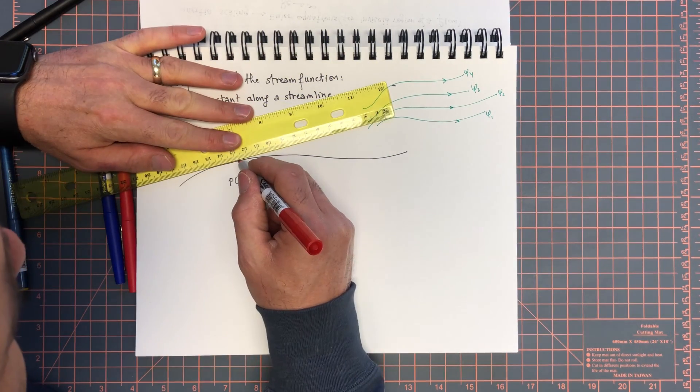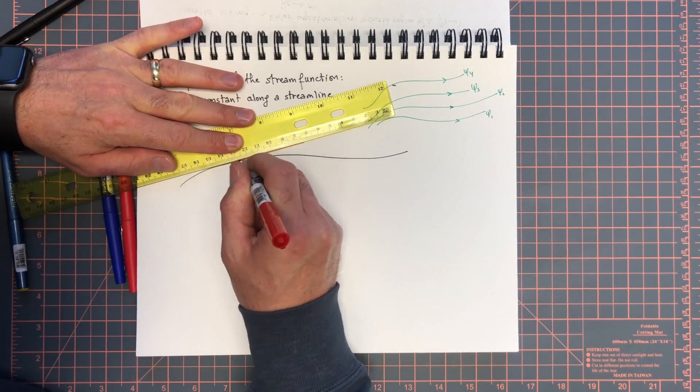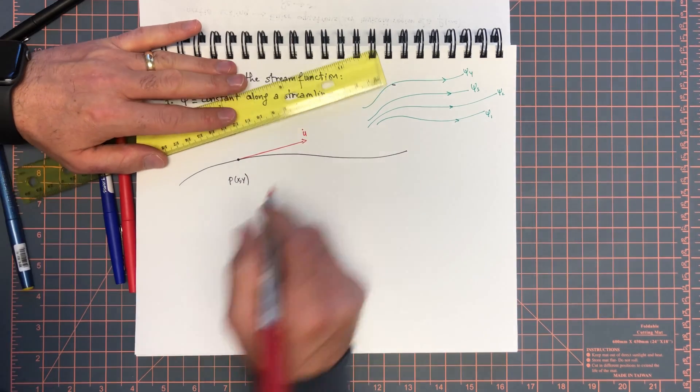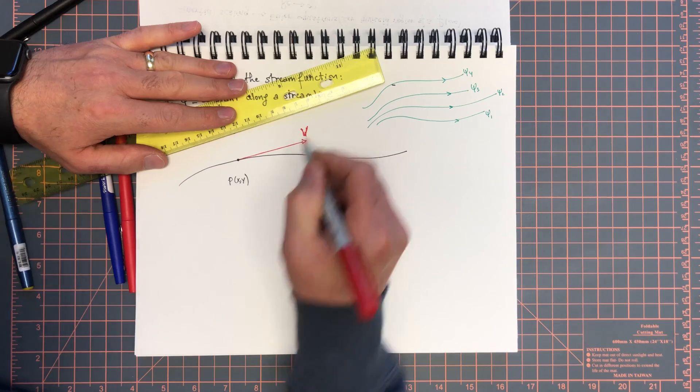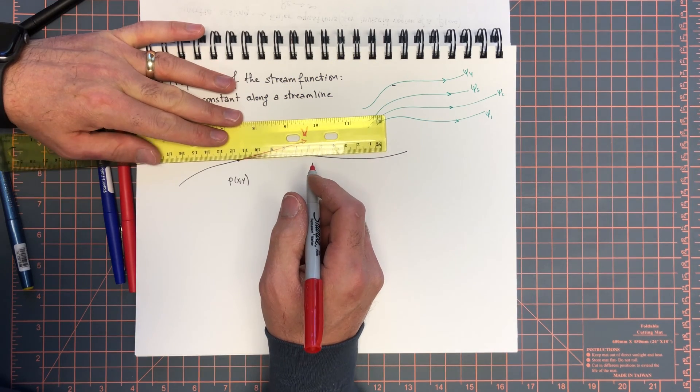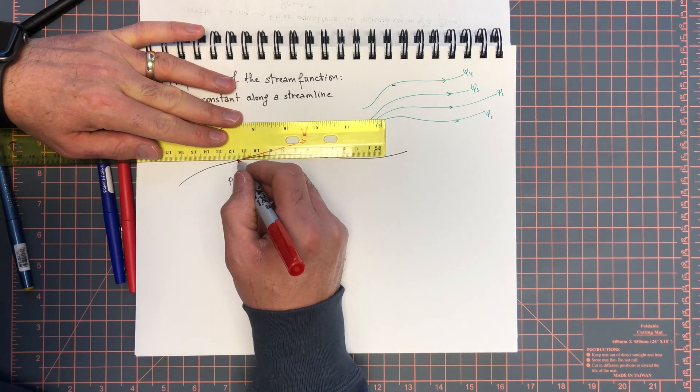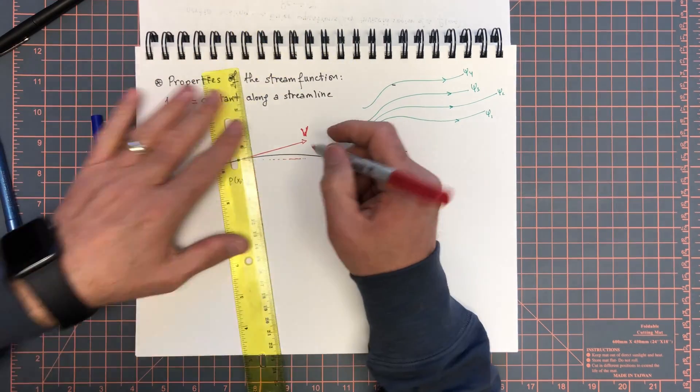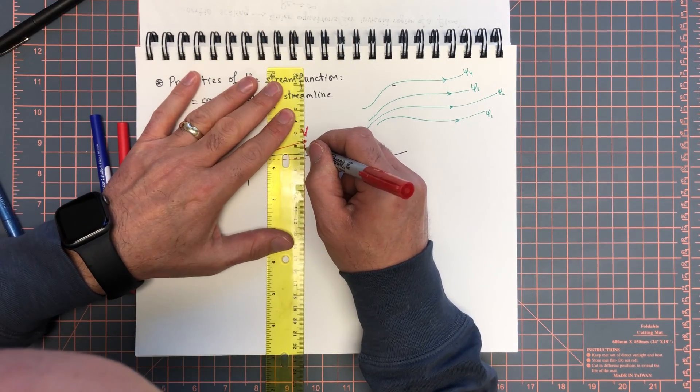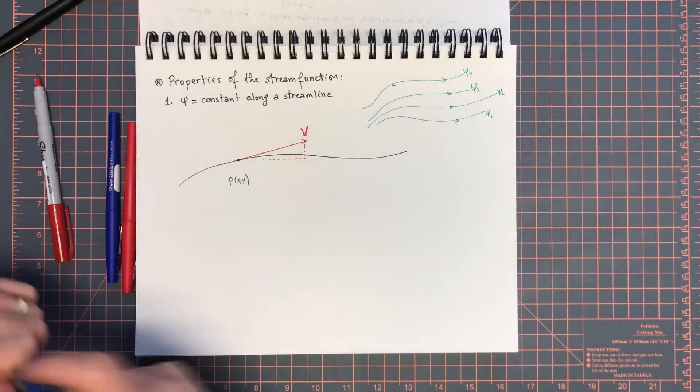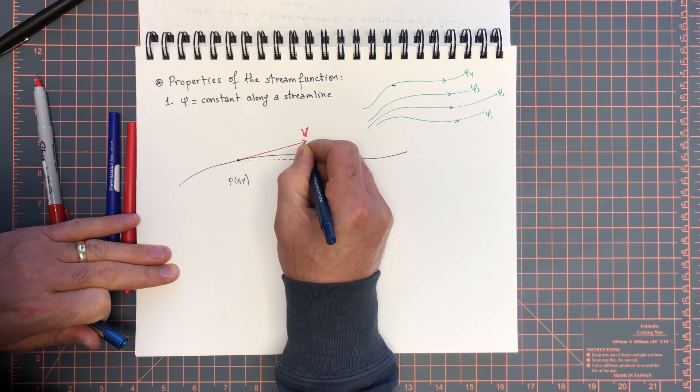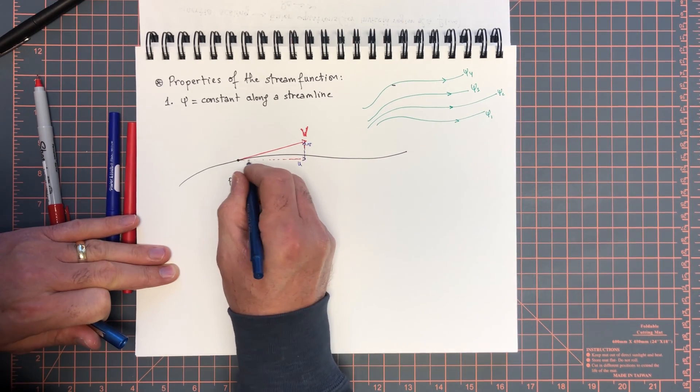That is the velocity v at that point, and we can decompose this into an x component and a y component. So this would be u and this would be v.